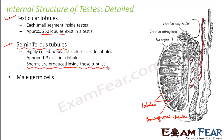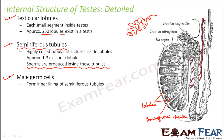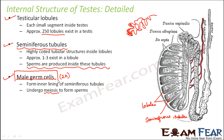Next are the male germ cells. These are the cells which form the inner lining of the seminiferous tubules. There are two types of cells forming this inner lining. The male germ cells are present on the inner surface of the seminiferous tubules, and they undergo meiosis — the reduction division where chromosome number reduces to half — to form haploid sperms from diploid cells. The male germ cells are also known as spermatogonia, because they give rise to sperms.